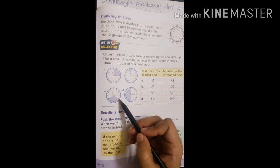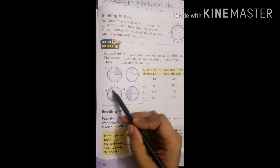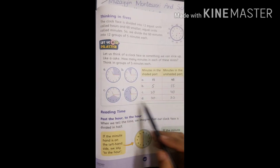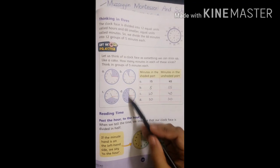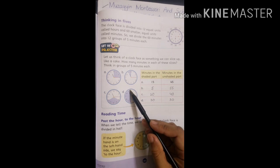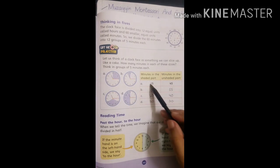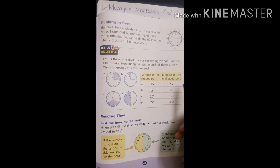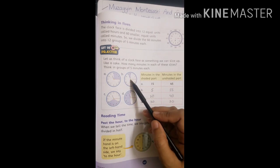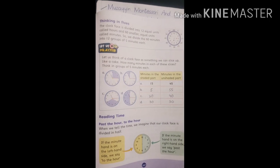Similarly, next: shaded part 20 minutes, unshaded part 40 minutes. Part D: half divided. Half is 30 minutes. Half is 30 minutes unshaded. When you total it, shaded plus unshaded equals 60 minutes. One hour is 60 minutes.